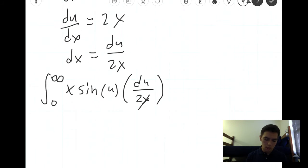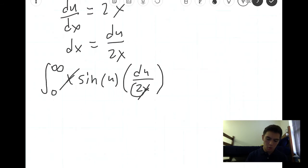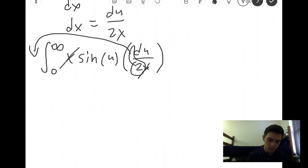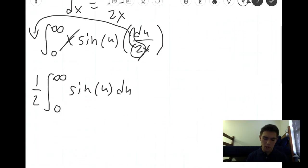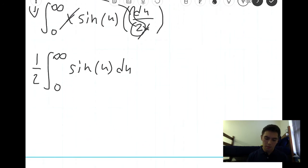So indeed, these two x's cancel here, and I'm going to move this one half to the outside of the integral, which you can do with all constants. And rewriting the integral, we have sine of u du, which is much nicer and more manageable than what we had initially.